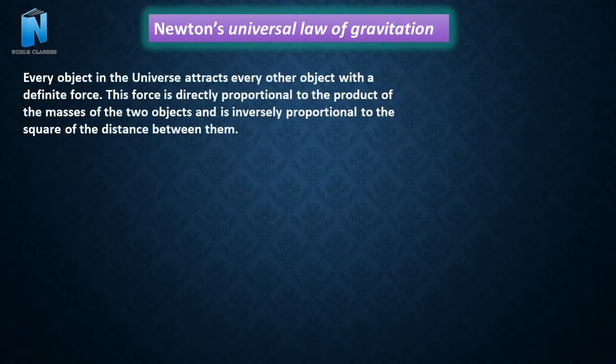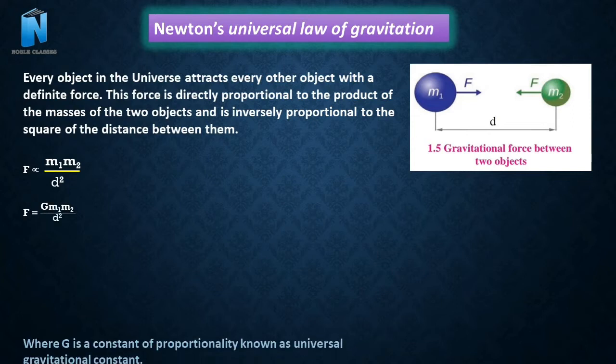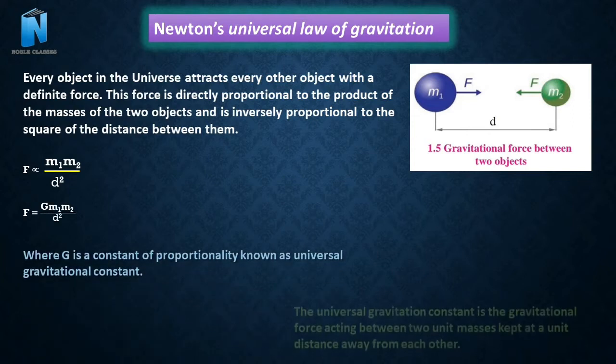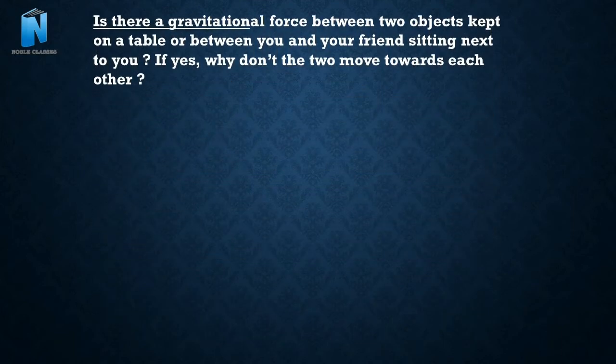Let's see next law that is Newton's Universal Law of Gravitation. He said force is directly proportional to M1 M2 upon D square. The formula becomes F is equal to G M1 M2 upon D square where G is Gravitation Constant.